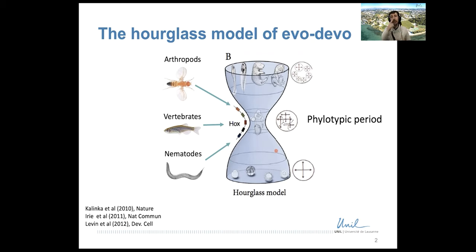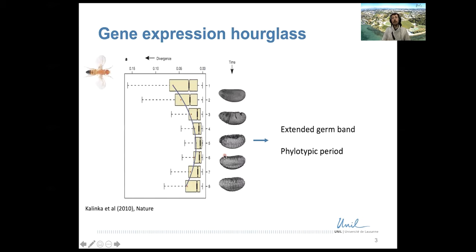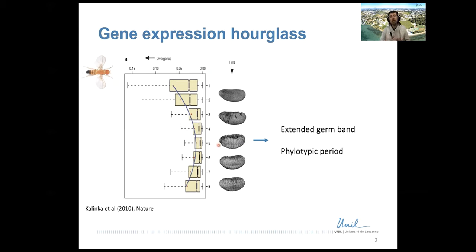Different arthropod embryos would look similar within the phylotypic period. This was originally observed in the 1990s anatomically on the appearance of the embryos, and some groundbreaking papers 10 years ago showed that this extended to molecular phenotypes. Notably, there was a paper by Kalinka and co-authors in 2010 which measured gene expression divergence between closely related species of Drosophila across embryonic development, and showed that in early and late development you have more divergence of expression between species, but in mid-development at the phylotypic period, you also had the most conservation of gene expression. This means that this anatomical similarity comes from the genome through gene expression.